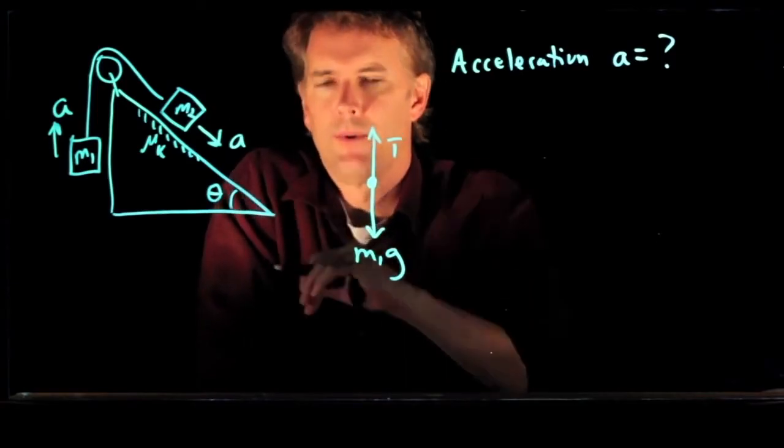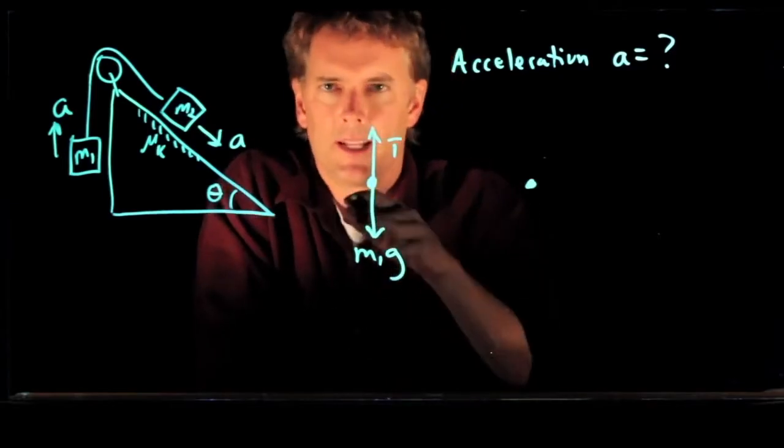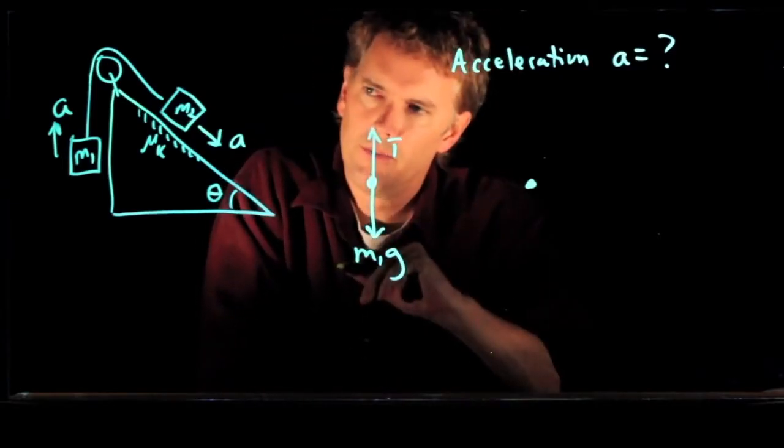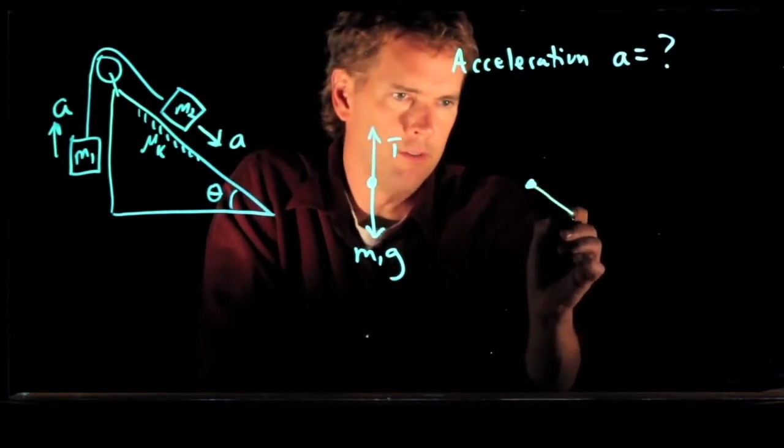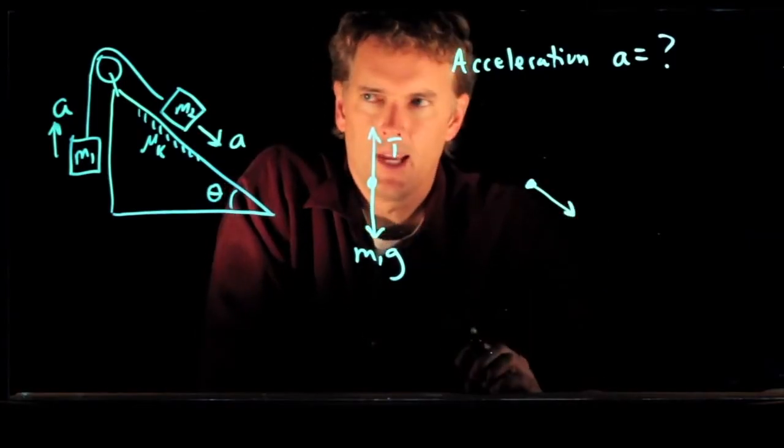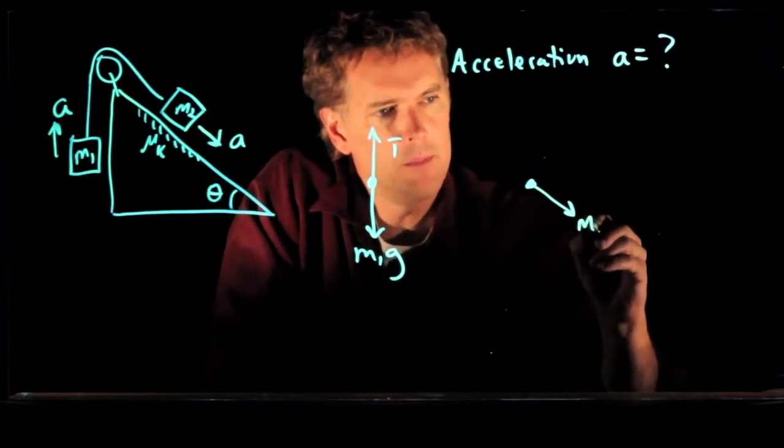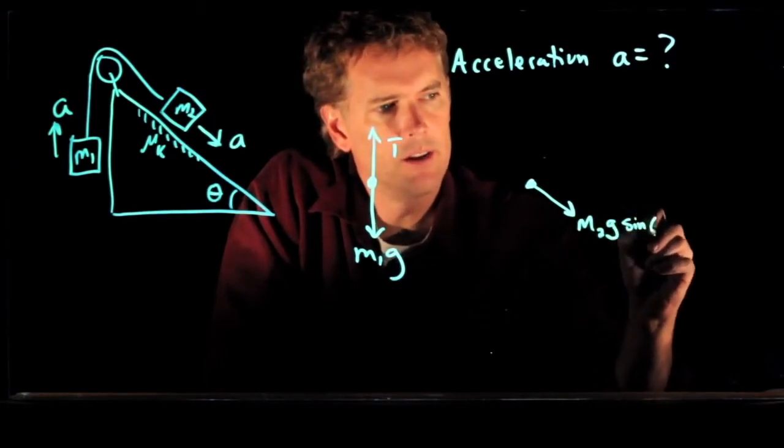What about number two? Number two, it's on an incline. So again, we want to use our rotated coordinate system. And in that rotated coordinate system, there is going to be a force down the plane. And we know that that force is M2g sine of theta.